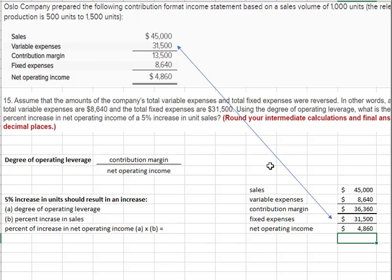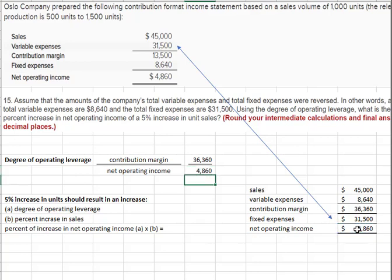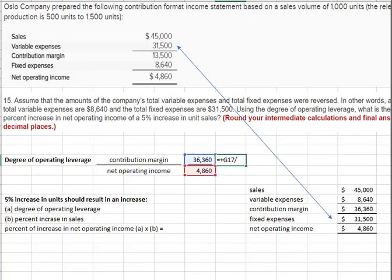That's just based on the instructions given. Degree of operating leverage is contribution margin over net operating income. So we take our contribution margin and divide it by our net operating income. That is expressed as a decimal — they tell you to round to two decimal places — so we'll do that in Excel because Excel doesn't naturally round.